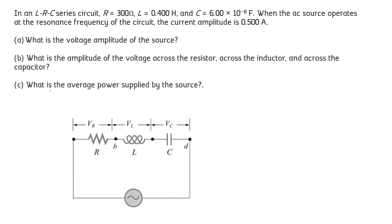In this question we have to determine the voltage amplitude of the source, the voltage difference across the resistor, the inductor, and the capacitor, and find the average power supplied by the source. We are given an LRC circuit where the resistance is 300 ohms, the inductance is 0.400 H, and the capacitance is 6×10⁻⁸ F. The AC source operates at the resonance frequency.